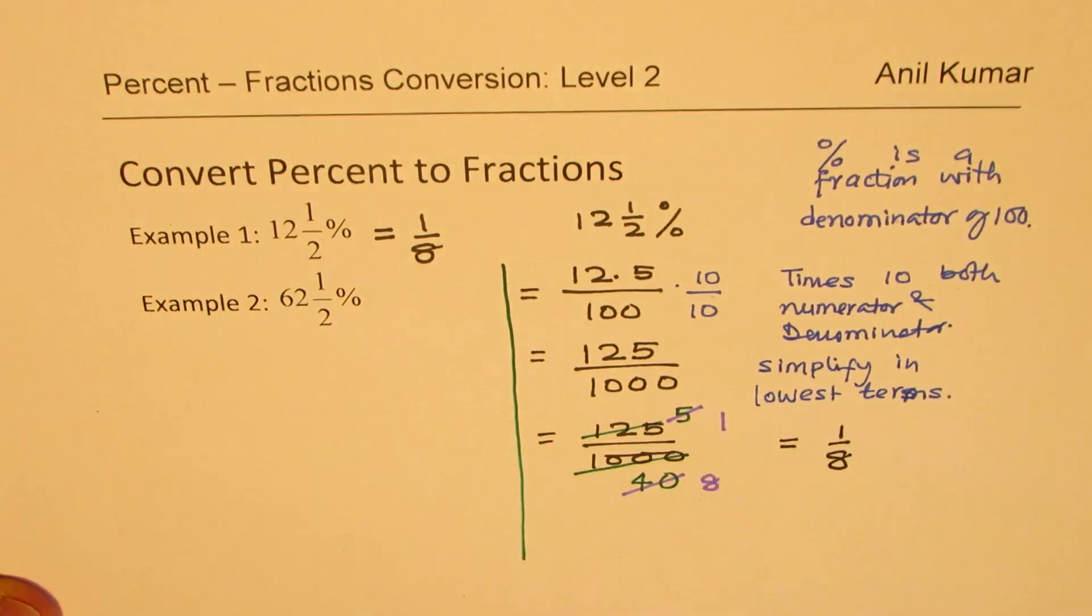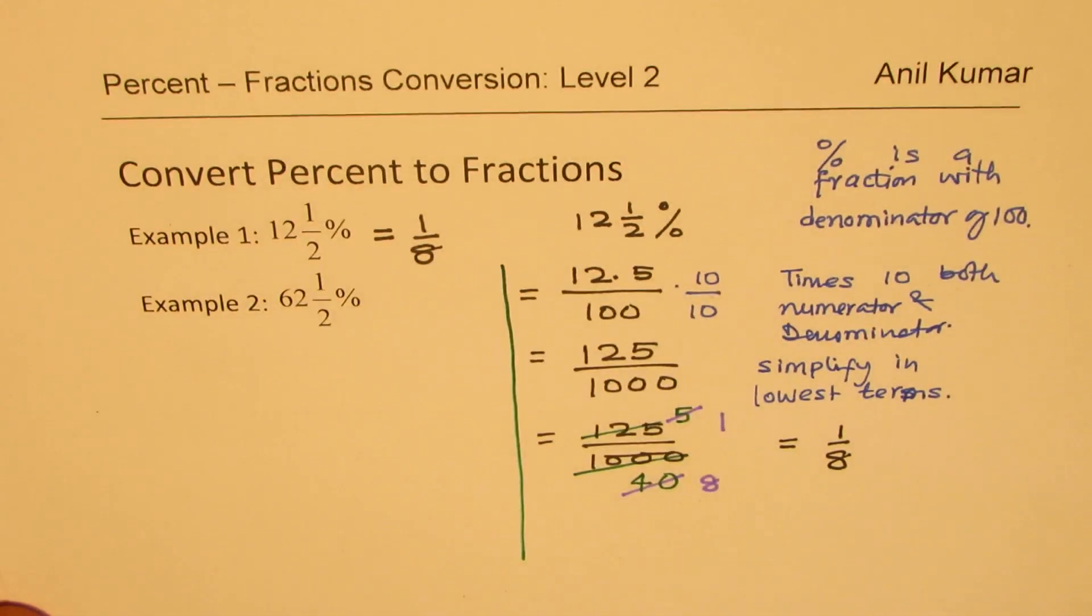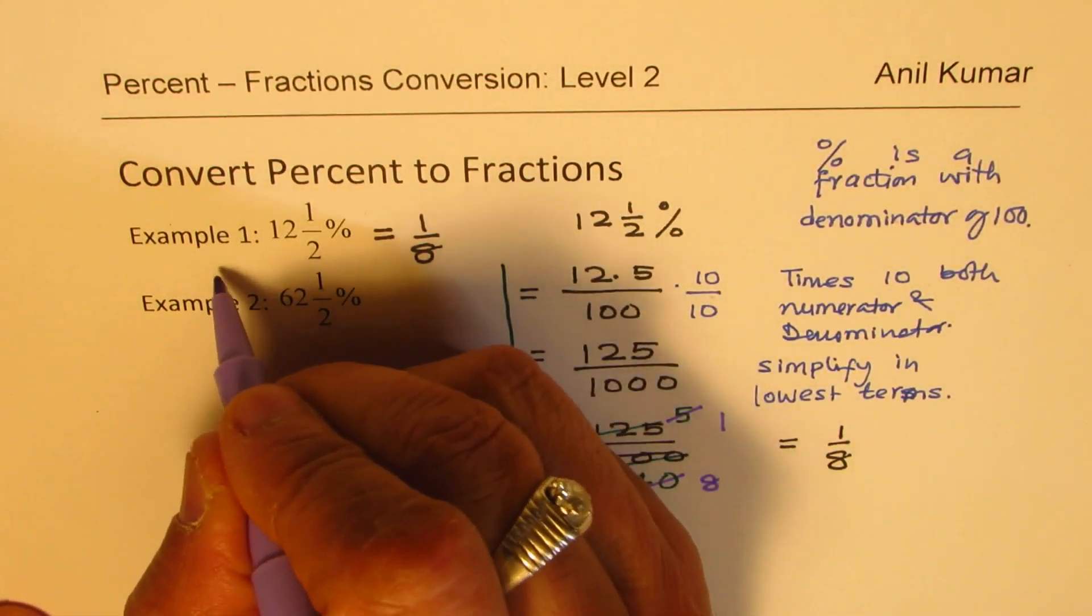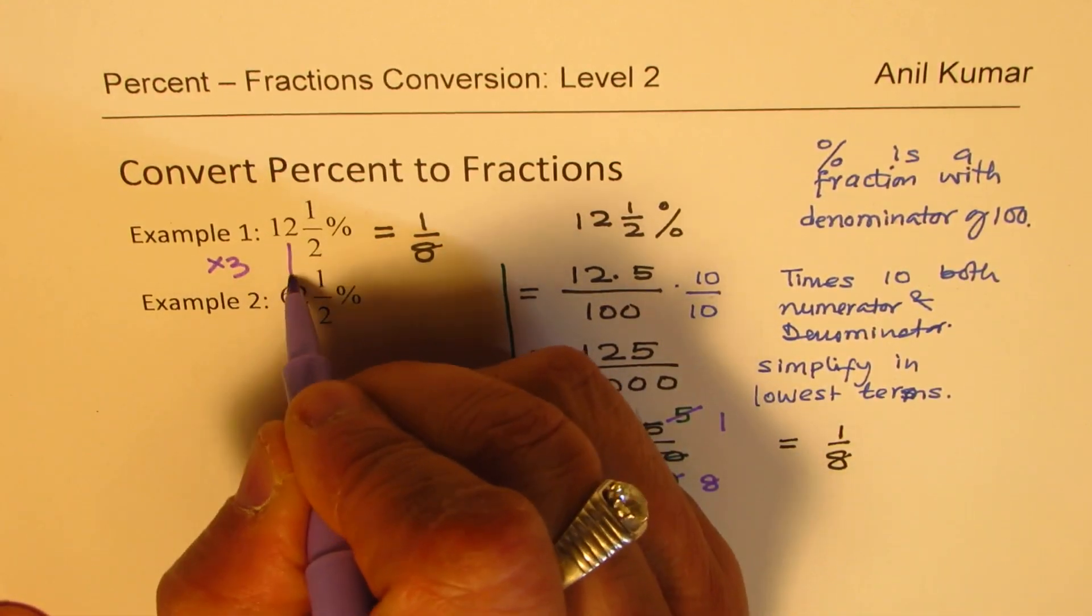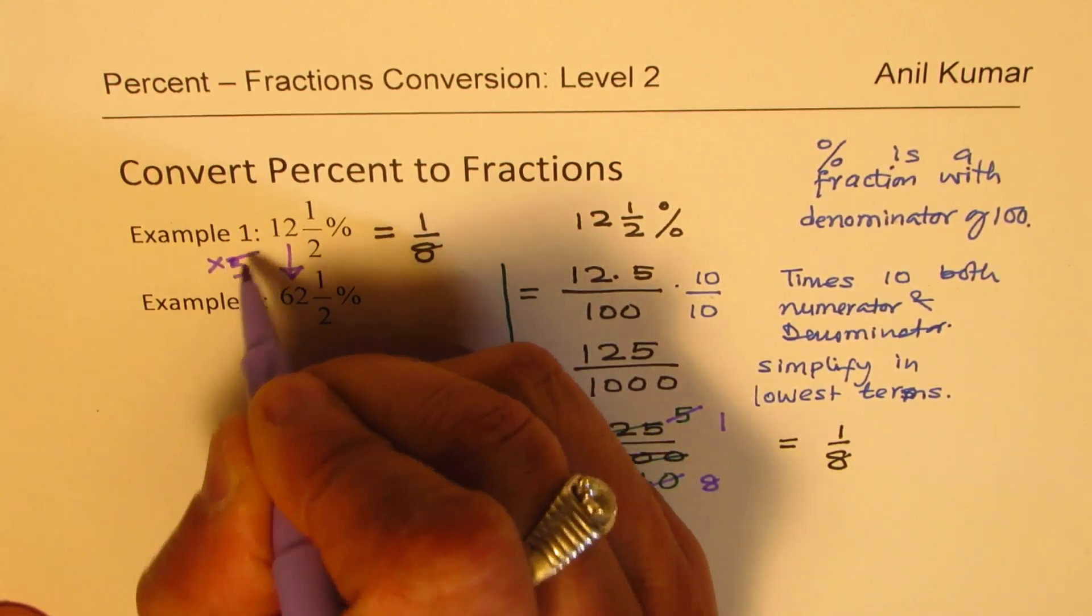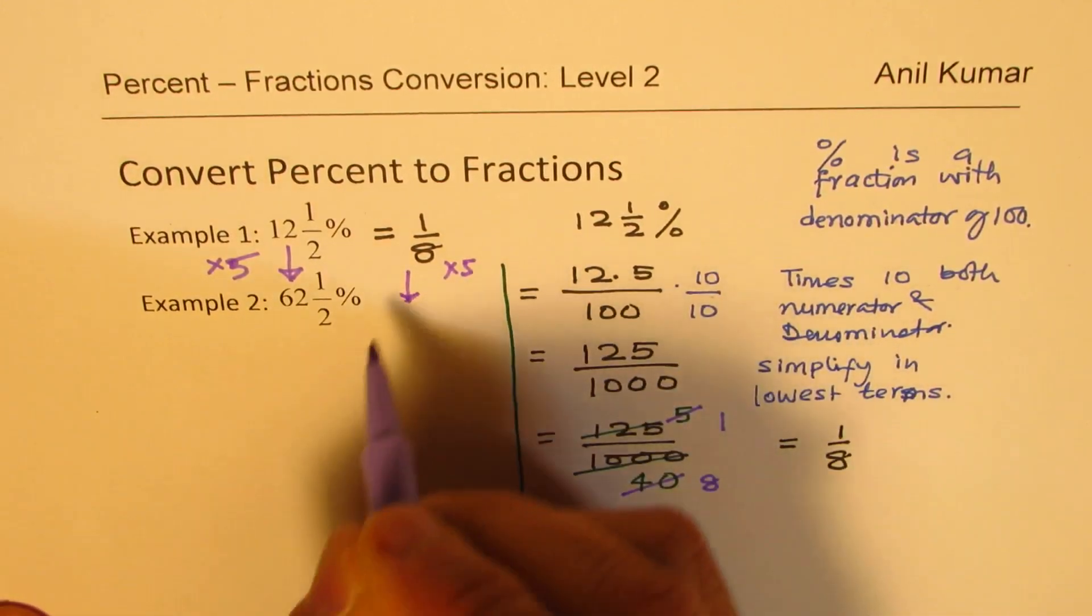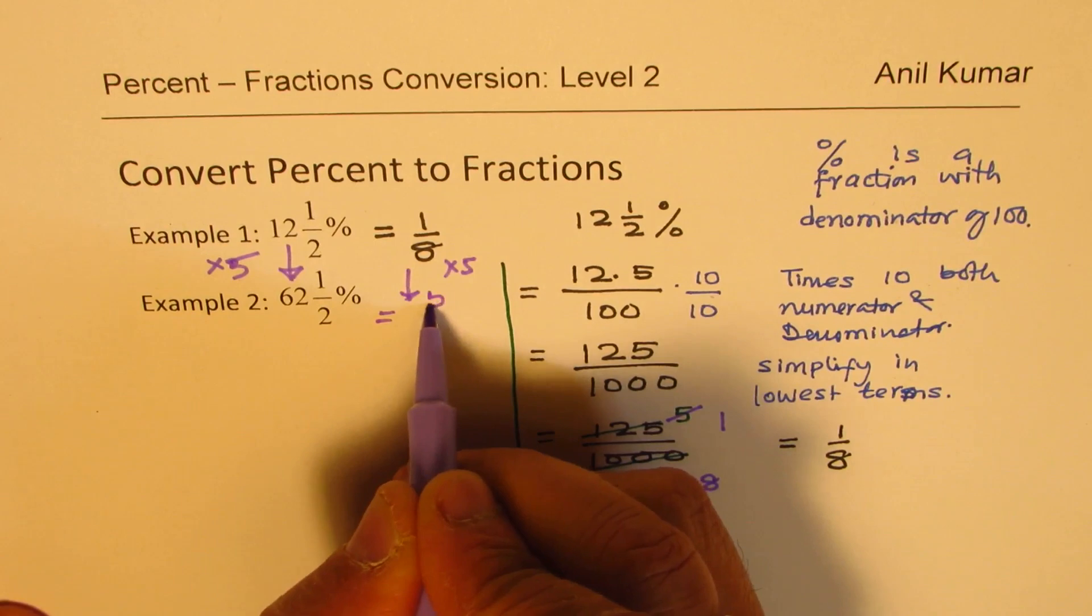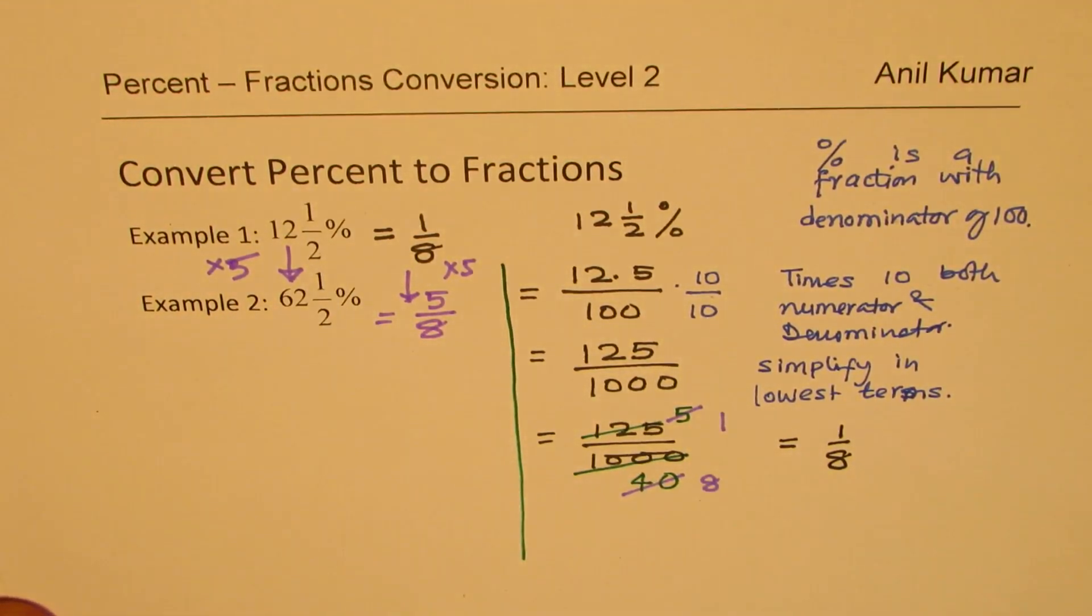As I earlier said, we could actually derive this result directly also. So if I times this by 5, since this is times 5, so times 5, you get this. Similarly, times 5 should give you the result. So we expect 5 over 8 as our answer for 62 and a half. Now let us see, do we really get it? So we'll apply the same steps.